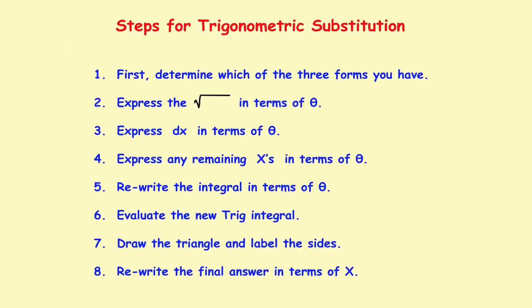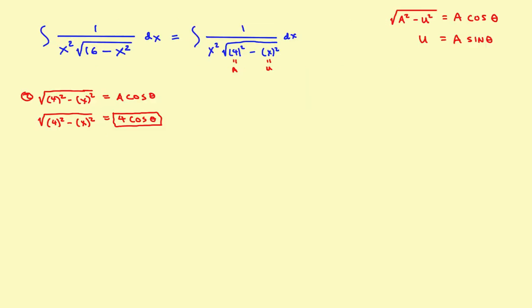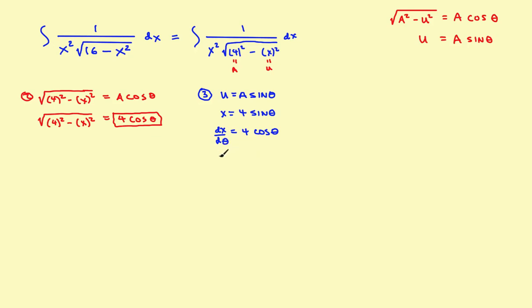Step 3: express dx in terms of theta. Starting from u equals a times sine of theta — here x equals 4 times sine of theta — take the derivative of x with respect to theta: dx/dθ equals 4 cosine of theta. Therefore, dx equals 4 times cosine of theta dθ. This takes care of the dx, changing it into a theta expression.